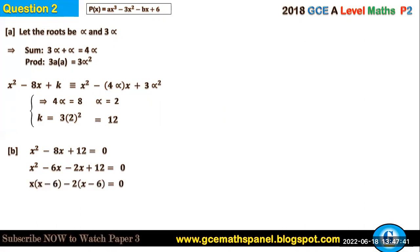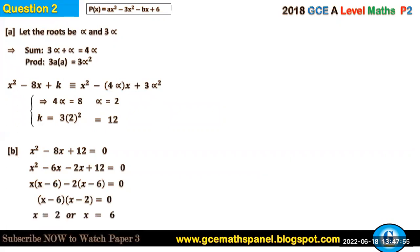Note that negative and minus are used interchangeably, but the numbers are either negative or positive. Completely factorizing gives (x - 6)(x - 2) = 0, so x = 2 or x = 6. These are the roots of the quadratic equation.